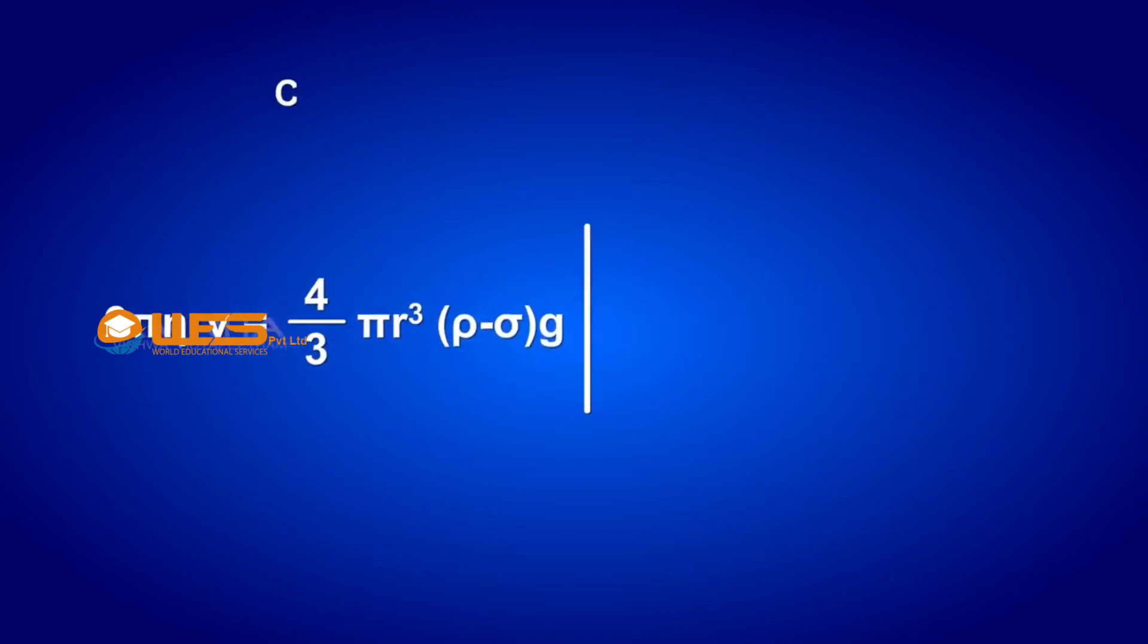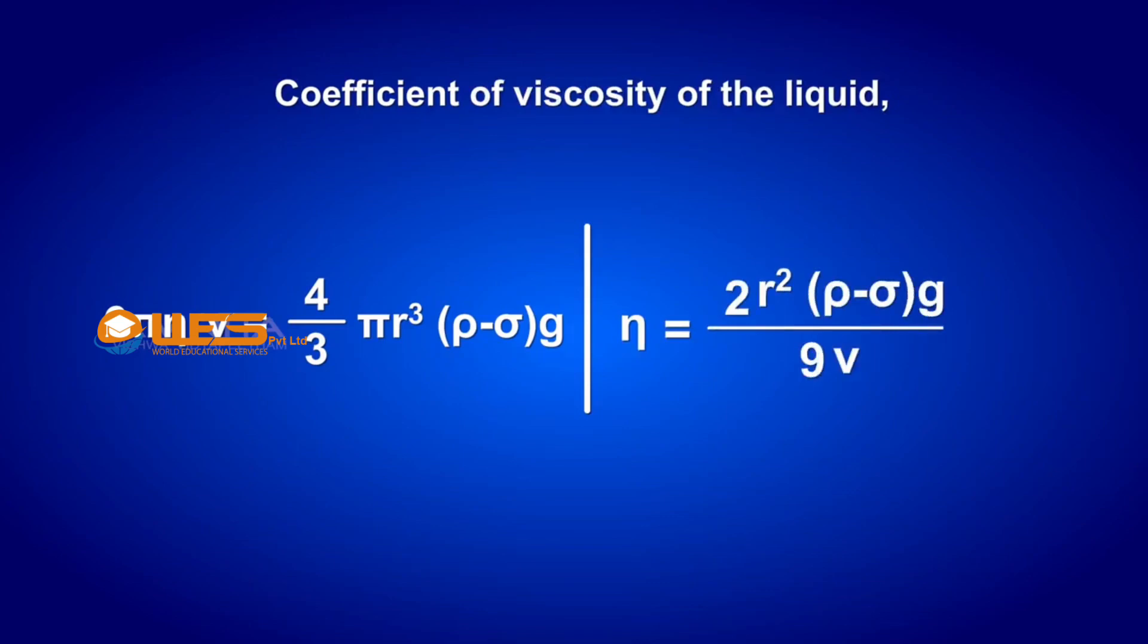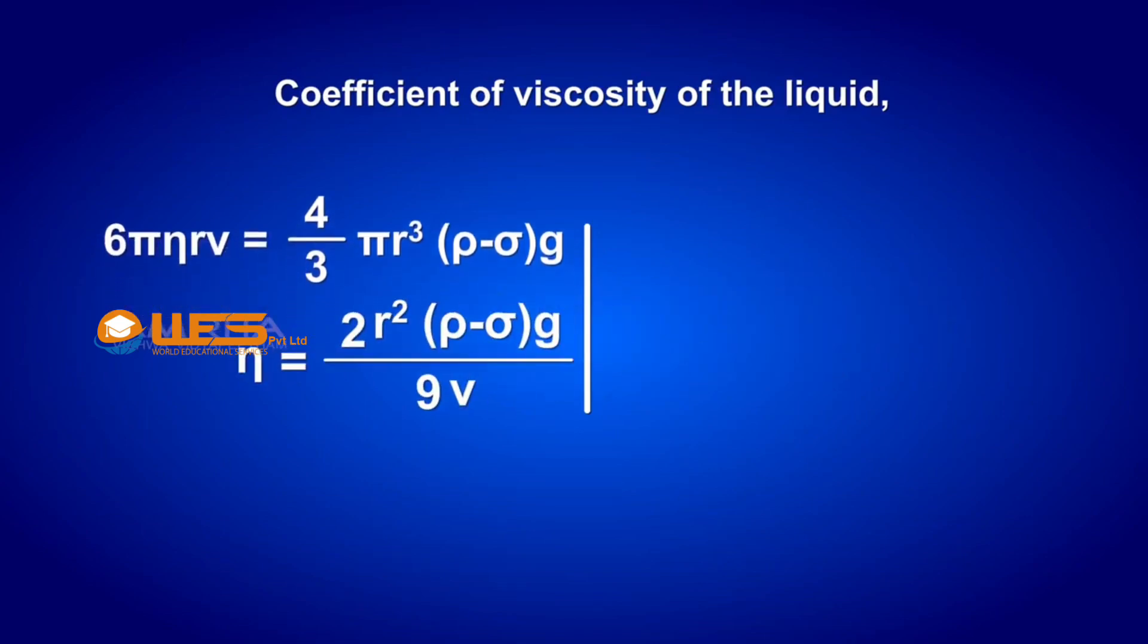So, the coefficient of viscosity can be calculated as η = 2r²(ρ - σ)g / 9v, where ρ is the density of the spherical body.